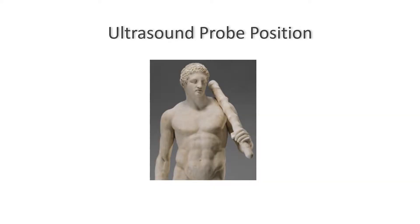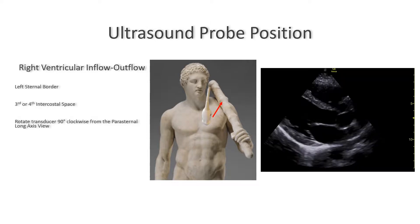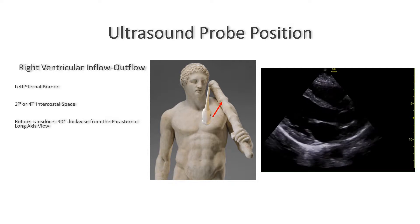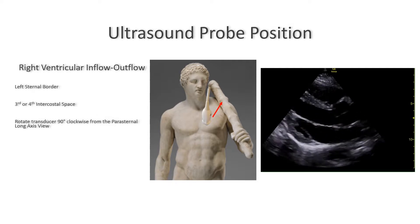Let's first talk about the ultrasound probe position. The fastest and easiest way to get the right ventricular inflow outflow view is to first get the parasternal long axis and rotate the probe 90 degrees clockwise, keeping the aortic valve at the center of the image. Take a look at this video and see how the parasternal long axis will become the right ventricular inflow outflow view just by rotating the probe.